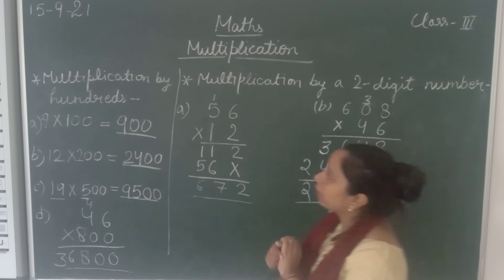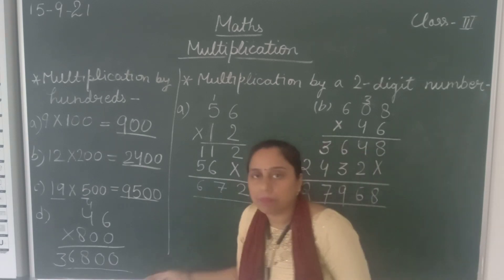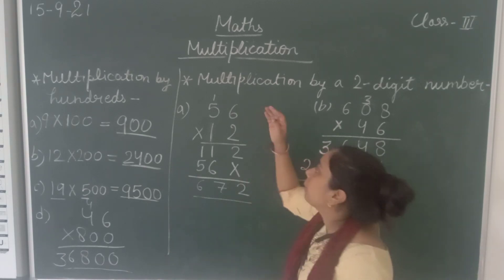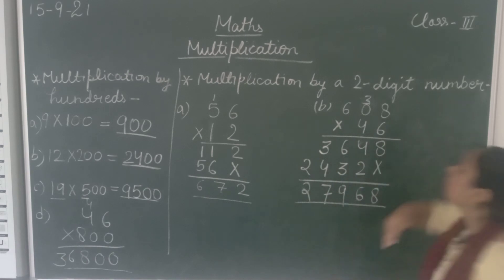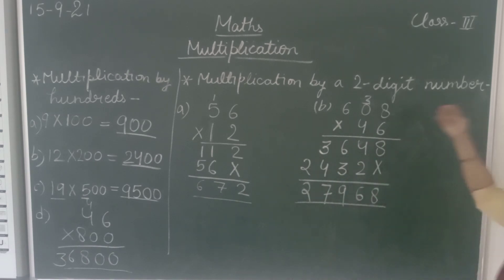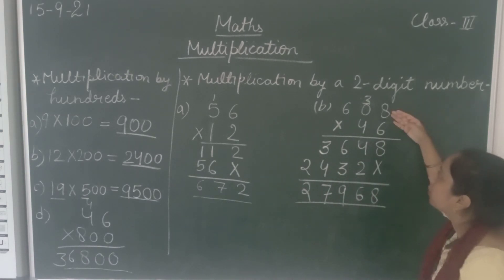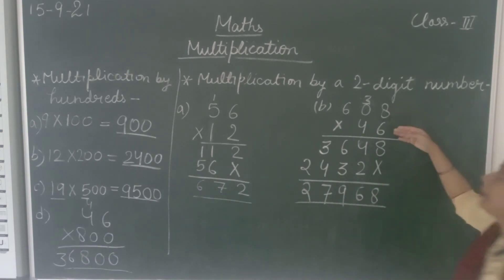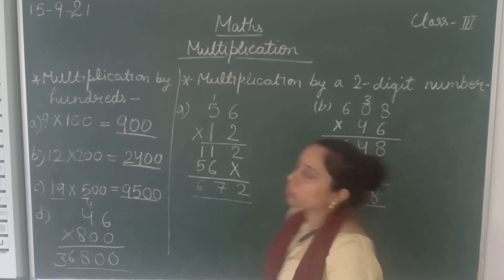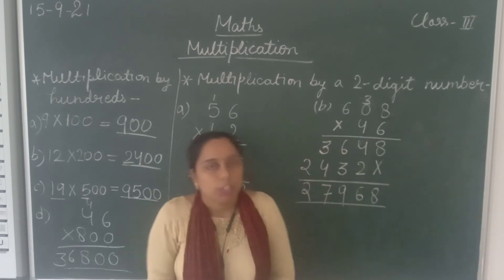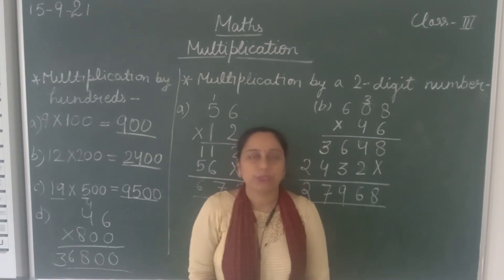So this is how you can find the product using multiplication by 100s, multiplication of a 2-digit number by a 2-digit number, and a 3-digit number by a 2-digit number. I hope you all understood it well. That's all for today — thank you, students!